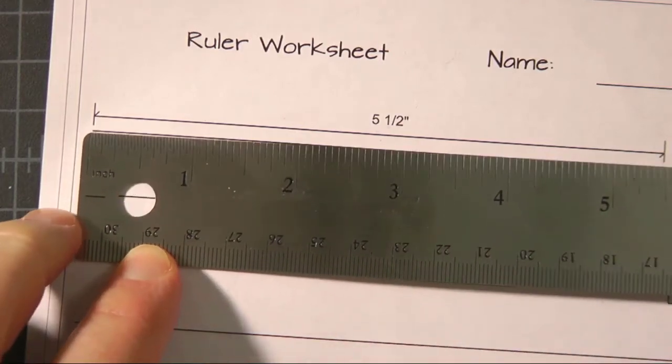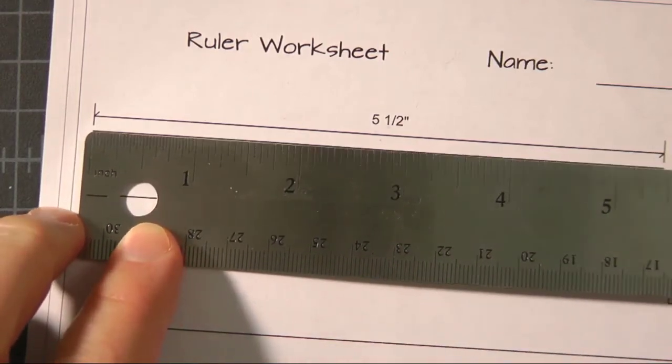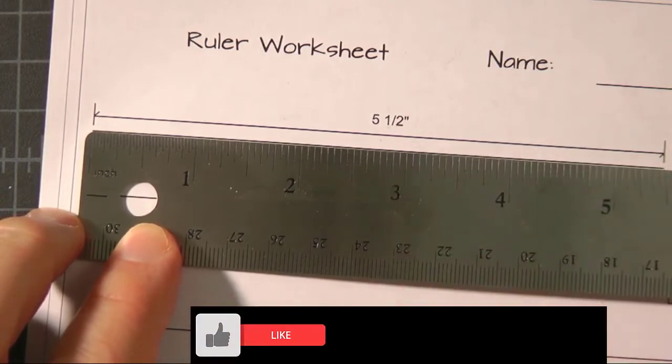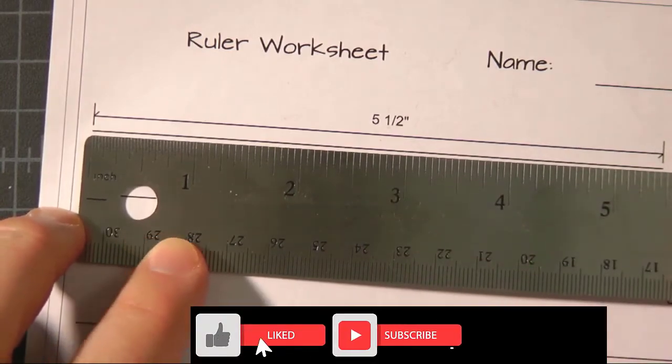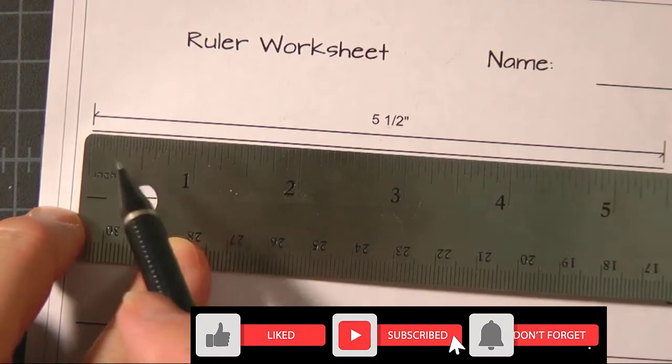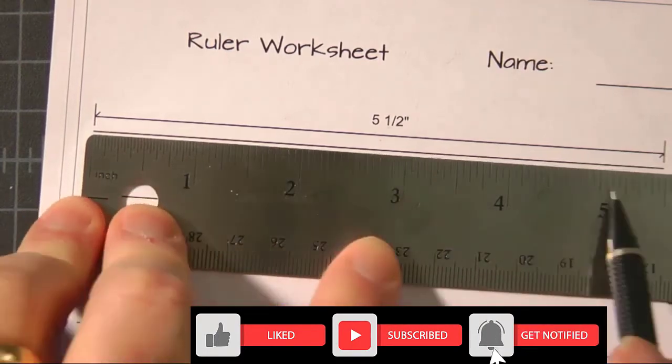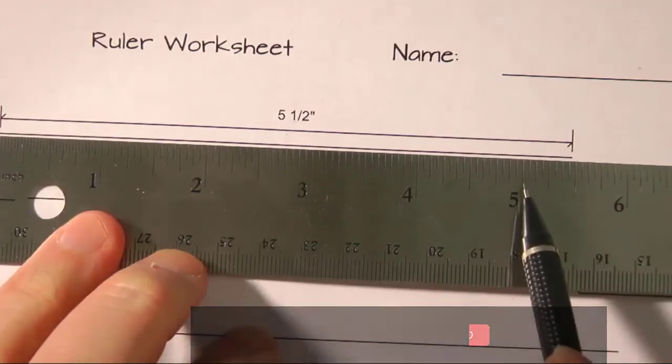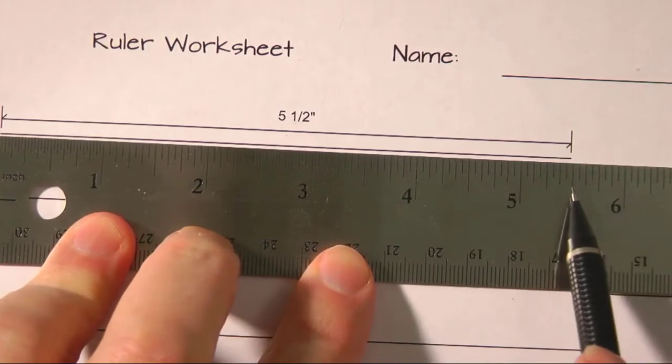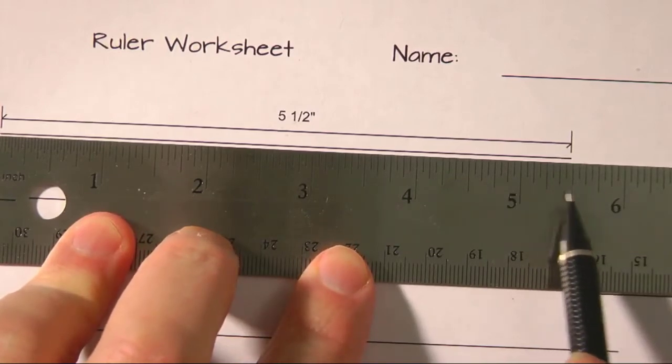So this measurement here is five and a half inches long, according to the key that I've left here. But if we look at the measurement itself, we start from zero and we go out to five. So here we have between the five and the six, we have the longest line here, which represents five and a half inches.